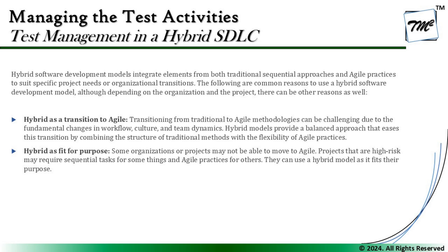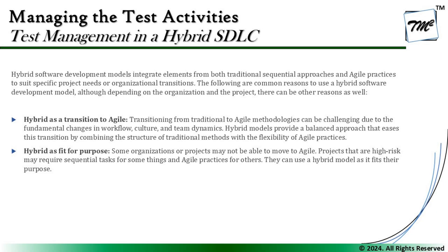Hybrid software development models integrate elements from both traditional sequential approaches and agile practices to suit specific project needs or organizational transitions. The following are common reasons to use the hybrid model, although there can be other reasons depending on the organization and project. The two most common reasons are: number one, hybrid as a transition to agile — the organization is looking to tackle current challenges and achieve the best from their practices.